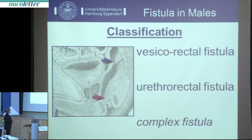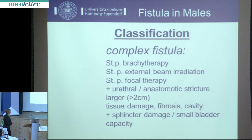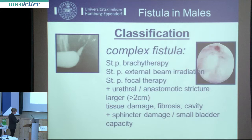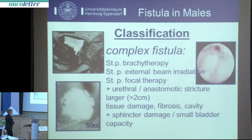Regarding classification: simple recto-urethral fistulas normally occur after bowel surgery or in patients with bowel disease. The typical urethral-rectal fistula follows treatment for prostate cancer. Complex fistulas are defined as those following brachytherapy, external beam radiation, or focal therapy; those with an additional urethral stricture or complete stricture of the anastomosis; larger fistulas greater than two centimeters; and those with tissue damage, cavity and fibrosis, sphincter damage, or small bladder capacity.